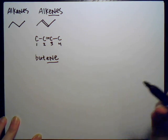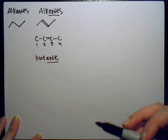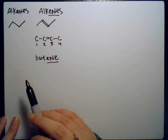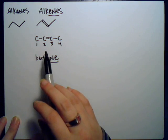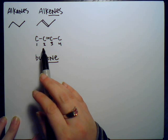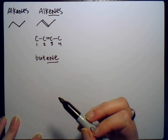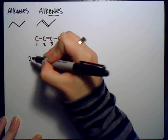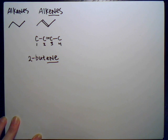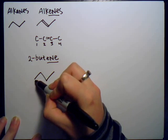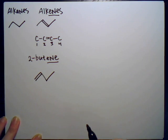If we just say 'butene,' how would we know on which carbon the double bond occurs? Just like any other substituent, we have to be specific. In this case, where the double bond occurs between carbons two and three, we would say '2-butene,' indicating that the double bond begins on carbon two.